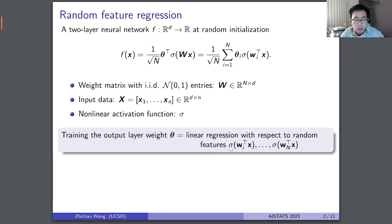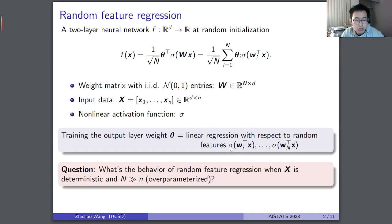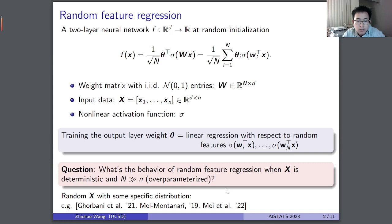In this work, we want to consider the following question: what is the behavior of the random feature regression model when data X is deterministic and capital N, the width, is much larger than the sample size? This regime is called the over-parameterized regime, since the number of parameters for theta is much larger than the sample size. This has been studied in several papers when X is also random. Here, we want to consider the weakest assumption for X, so we don't assume any specific distribution.